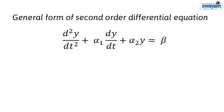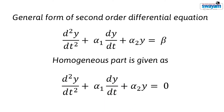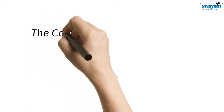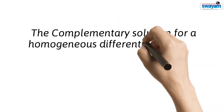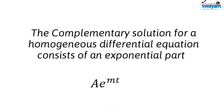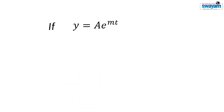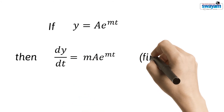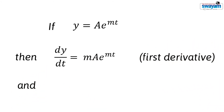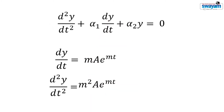To find the complementary solution, we consider the homogeneous part of the general form equation. The complementary solution for a homogeneous differential equation consists of an exponential part: a·e to the power mt. If we have a function y equal to a·e to the power mt, then differentiating y with respect to t gives m·a·e to the power mt, and the second derivative gives m²·a·e to the power mt.